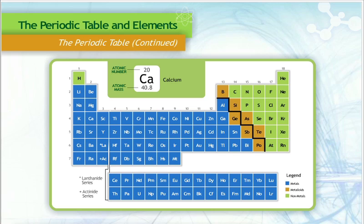Metalloids can, in some ways, act as metals, and in other ways, as nonmetals. Examples of metalloids are silicon and arsenic.